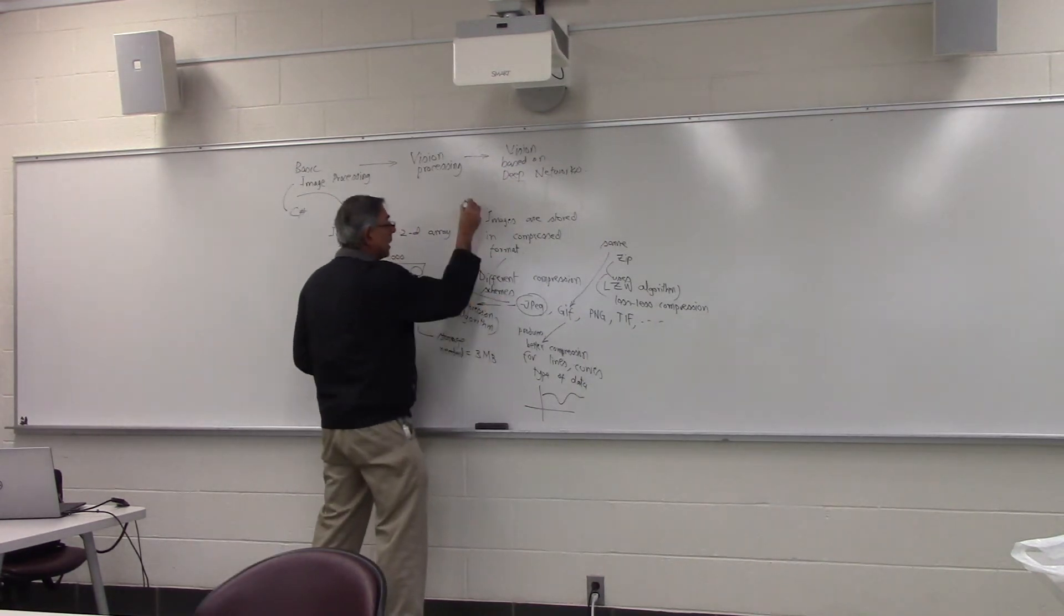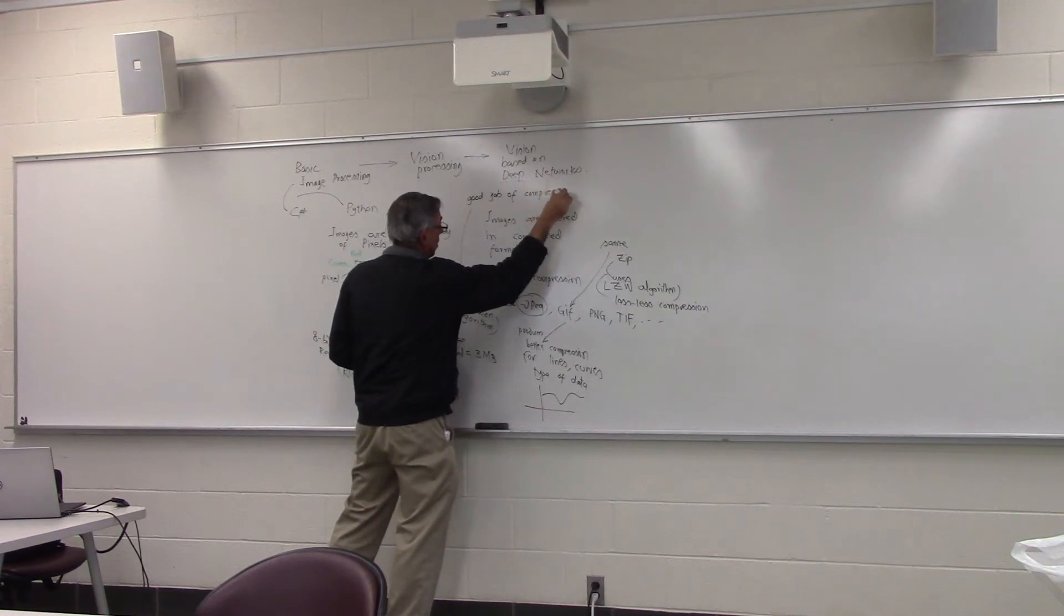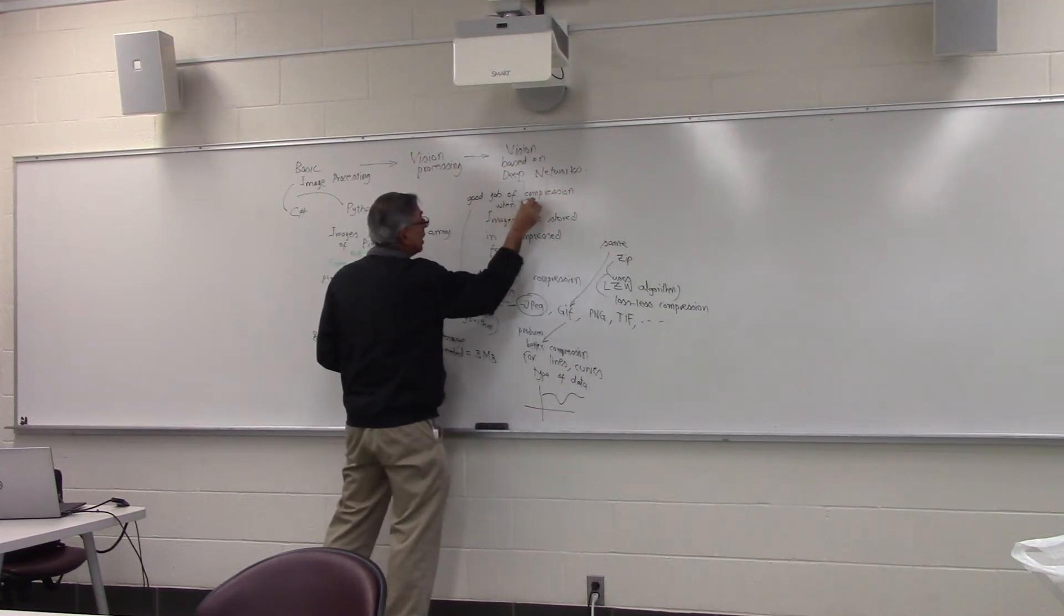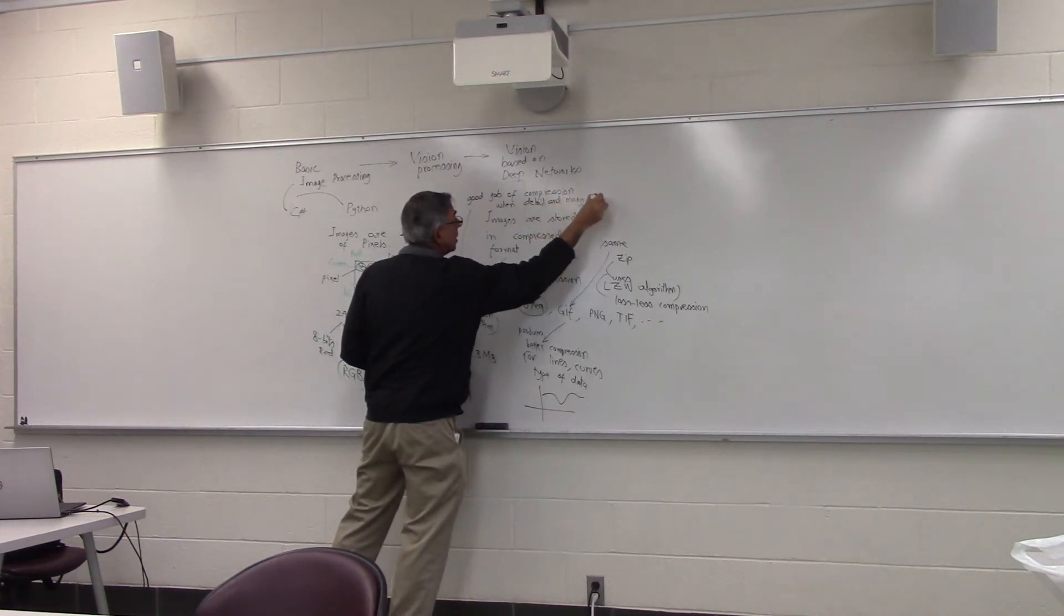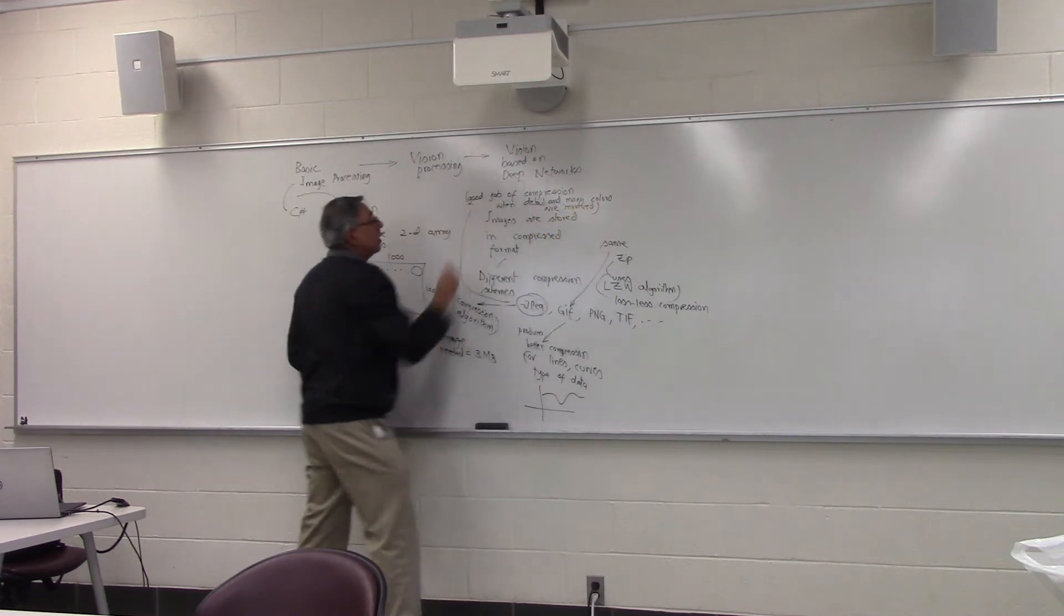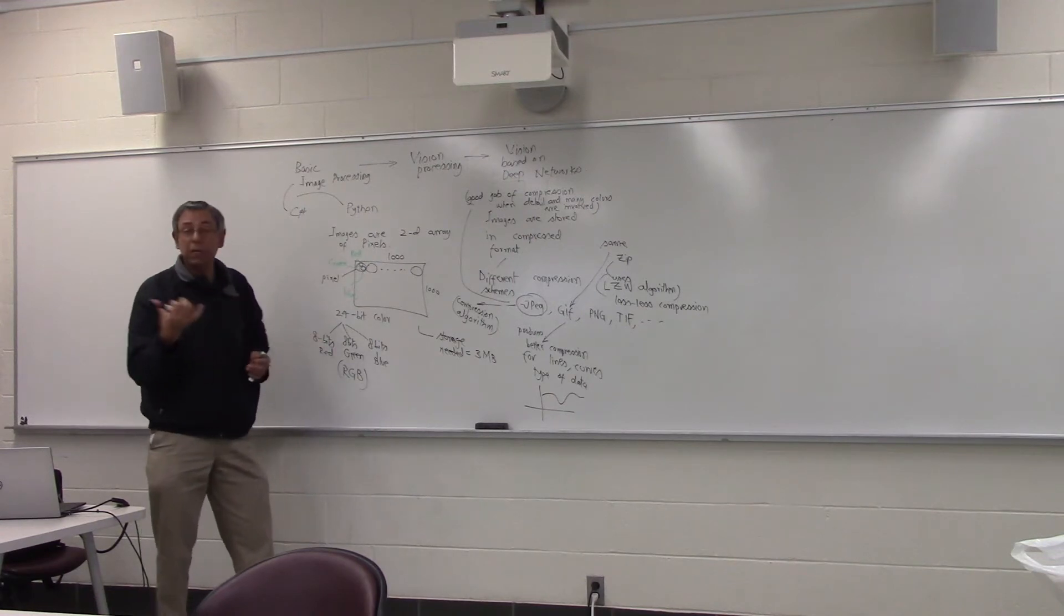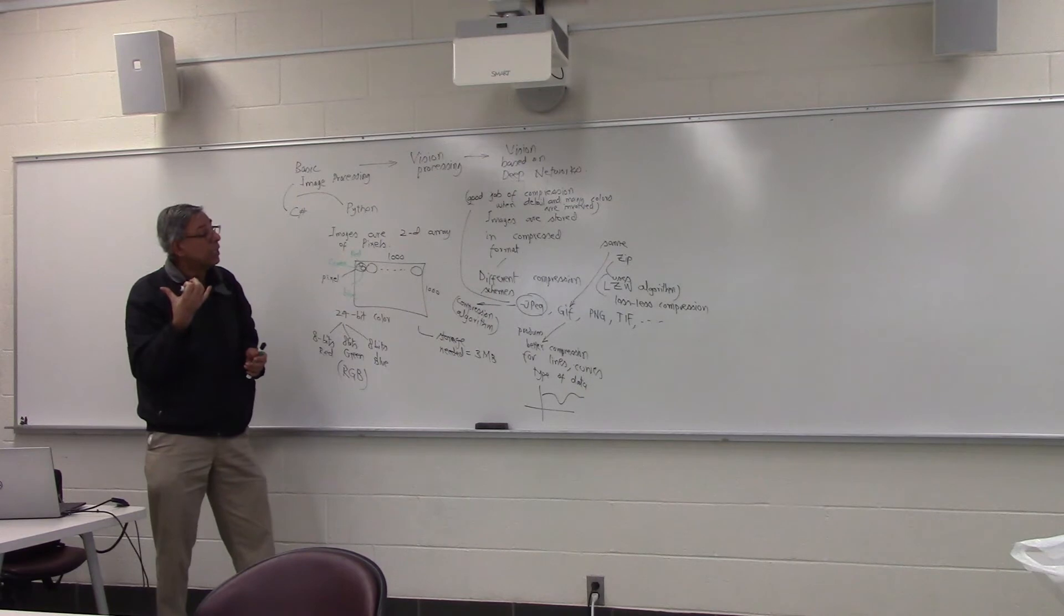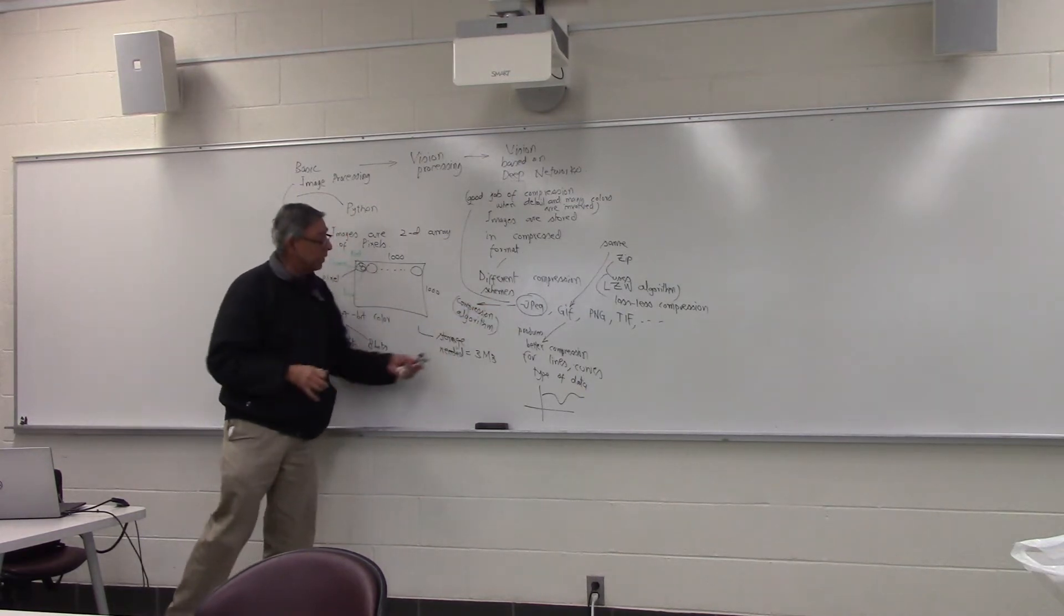JPEG does a good job of compression when detail and many colors are involved. That's why pretty much all digital cameras will not use GIF, because your memory card will run out of memory very quickly. If our original is three megabytes, and if we had a lot of detail, a lot of colors, you apply GIF, it will only compress it to two megabytes.